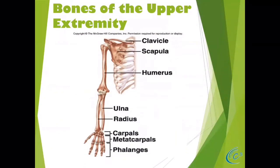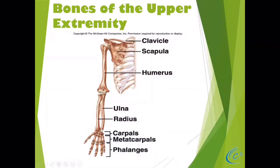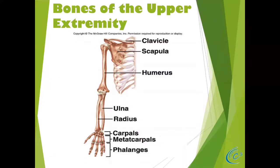Let's talk about the bones of the upper extremity. We have the clavicle, also known as the collarbone, and the scapula, also known as the shoulder blade. This is a very complex articulation and a lot of things can go wrong. In the upper extremity we have the humerus, and in the forearm there are two bones: the ulna and the radius. The radius is the one below your thumb — that's where all the motion comes. When you pronate or supinate, moving your hand palm down or palm up, it's the radius that's moving, not so much the ulna.